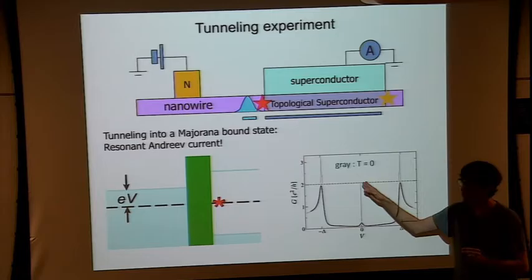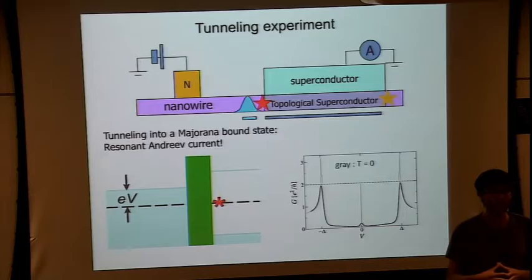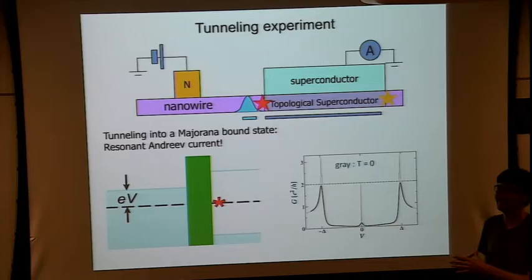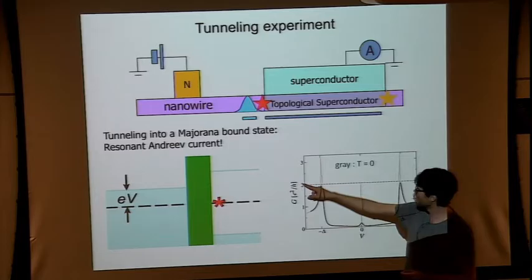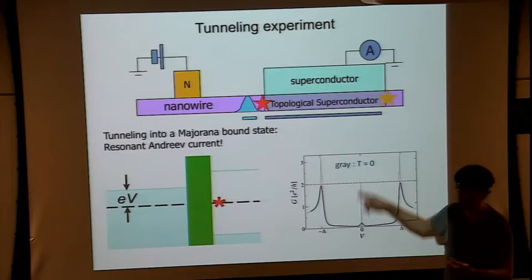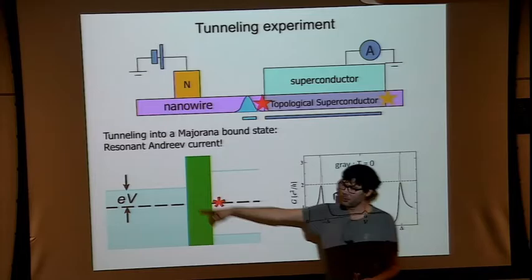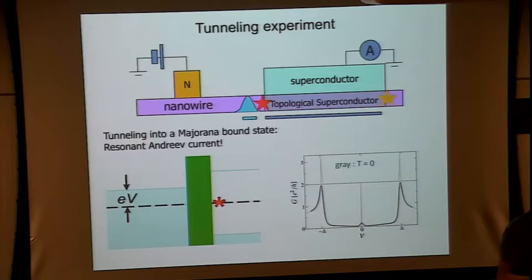Temperature destroys the beautiful 2e²/h quantized conductance result. Unlike the quantum Hall effect, which is robust, this quantized conductance zero-bias peak is not robust to trivial things like temperature, and all experiments are done at finite temperature. This is just a simulation — you take the zero-temperature result and convolve it with a broadened Fermi distribution. Nevertheless, even this dimple of a peak we can still detect.